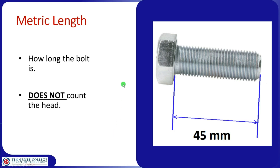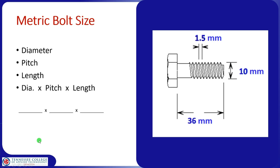Metric length is measured just like standard length — from the underside of the head to the tip, not including the head. It will be in millimeters. For practice: the diameter is 10 millimeters, the thread pitch is 1.5, and the length is 36 millimeters. So this is a 10mm by 1.5 by 36mm bolt — we may call it a 10 by 1.5 bolt, but it's 36 millimeters long.